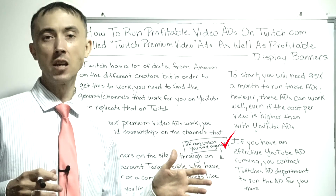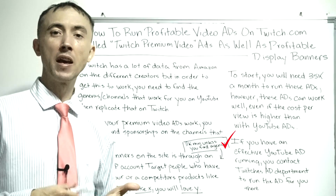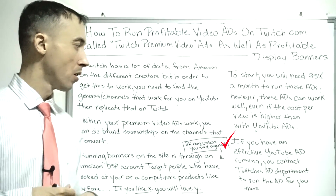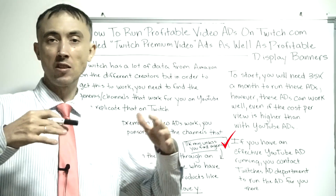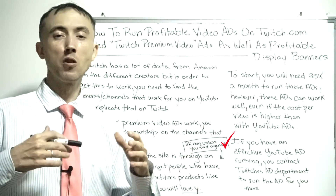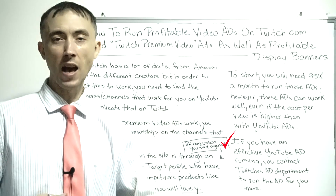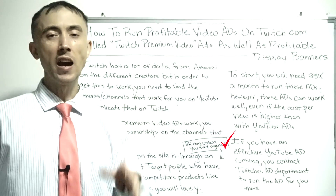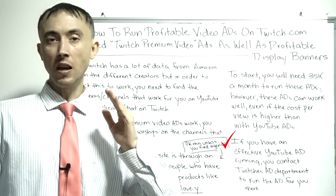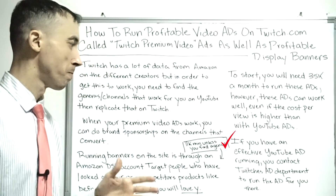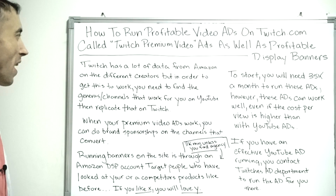Everything that's on Twitch is on YouTube in some form, including game playback channels where people are just watching others play games. You start with YouTube because there's no minimum ad spend — you run ads on YouTube through the Google Ads platform. Try out advertising, figure out if your video ad is working and the types of channels it will work on, and once you've done that, you're ready to move over.